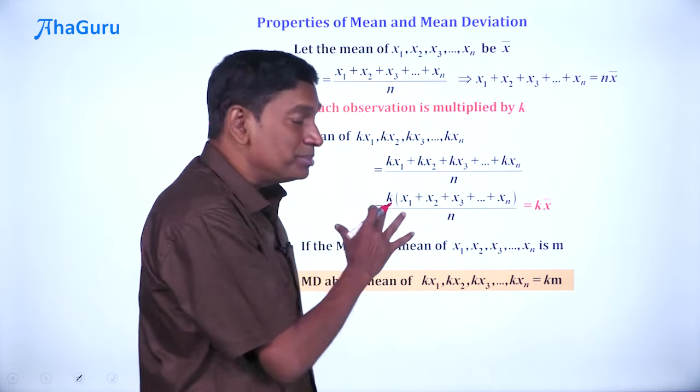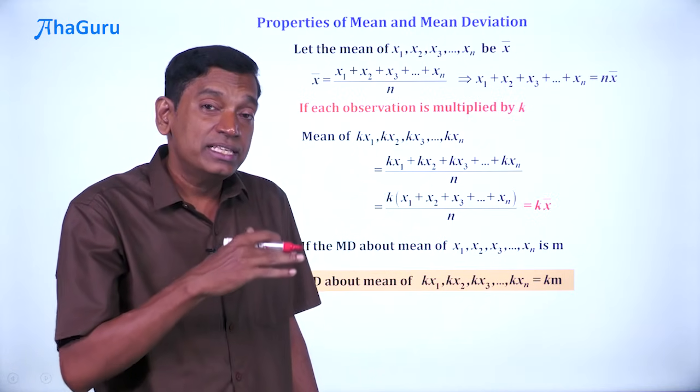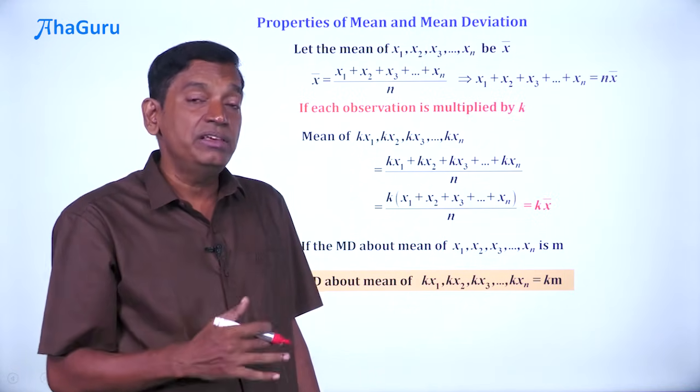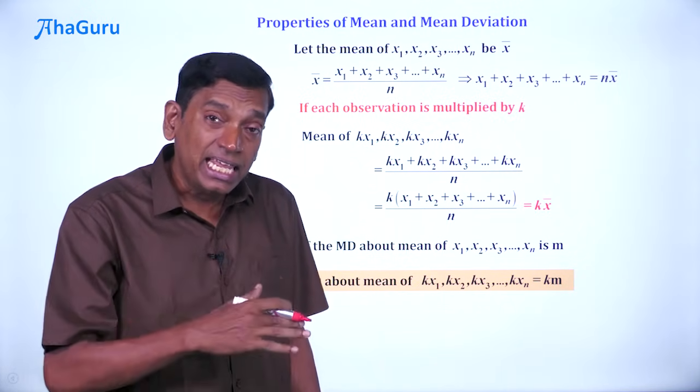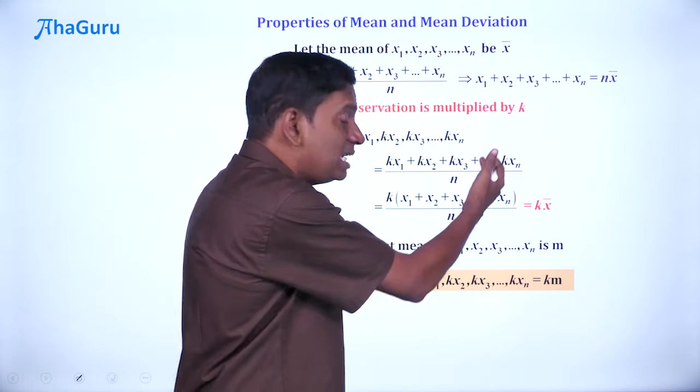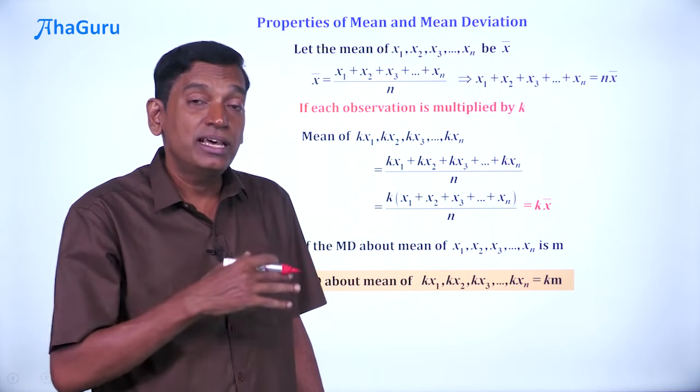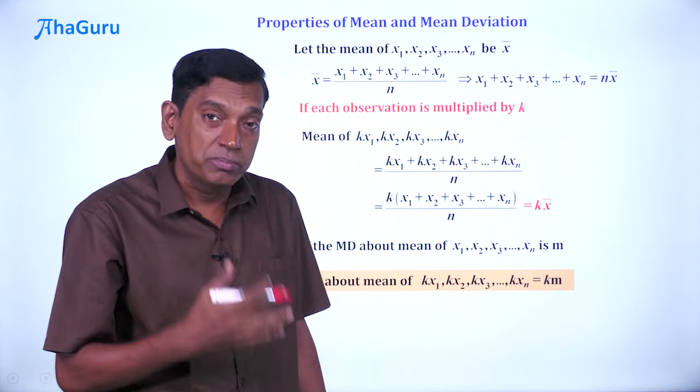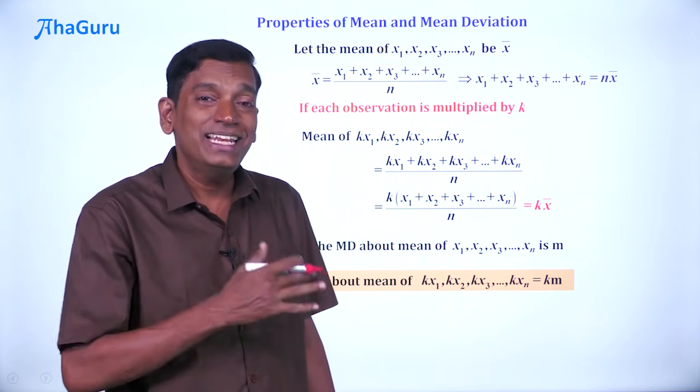This is important to remember: change of origin affects the mean but not the mean deviation. Multiplying is also called scaling. Scaling affects both the mean and the mean deviation in the same way. These are important properties to remember when solving problems related to mean and mean deviation.